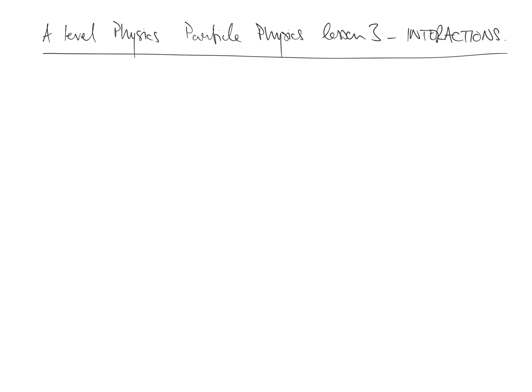Here is the third lesson in our particle physics series. Do look at lessons one and two before this if you haven't done already, because it will put our third lesson on interactions in more context. What we're going to do here is cover the four forces of nature and then how we predict whether reactions take place or not.